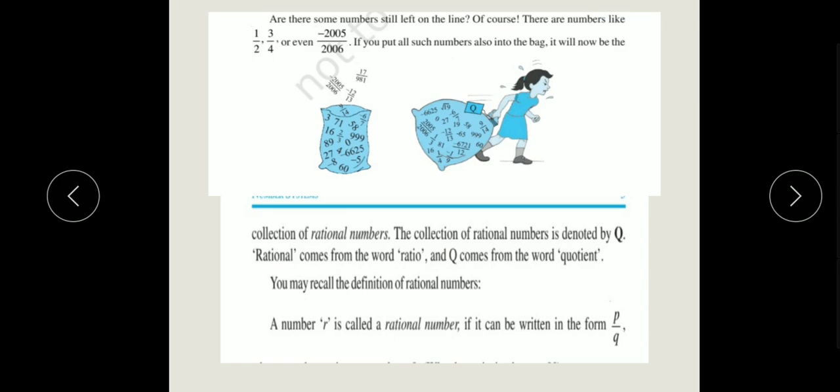In our last integers bag, now we have collected all the p upon q form numbers into our bags. Now, it becomes rational numbers. The collection of rational numbers is denoted by Q. Rational number is denoted by Q. Rational comes from the word ratio. The way we write ratio, that's how it is. Rational numbers, this word comes from the word ratio, and Q comes from the word quotient. You may recall the definition of rational numbers: a number R is called a rational number if it can be written in the form p upon q.